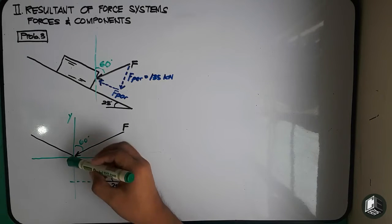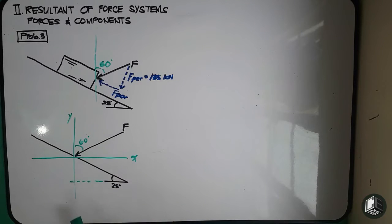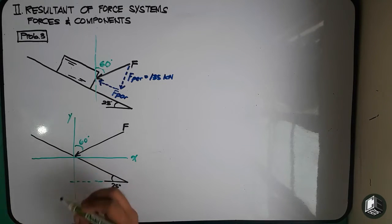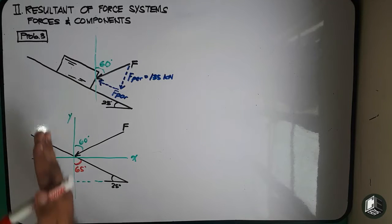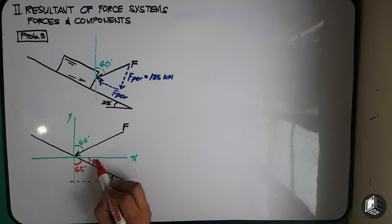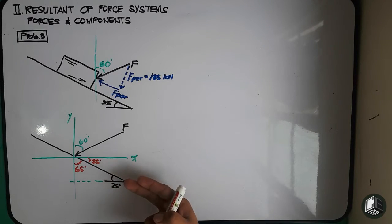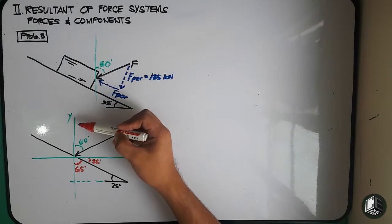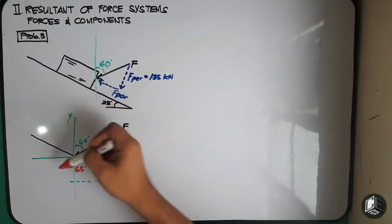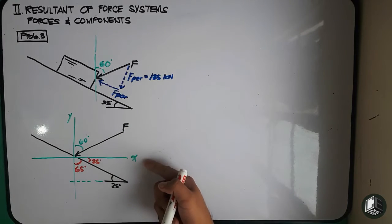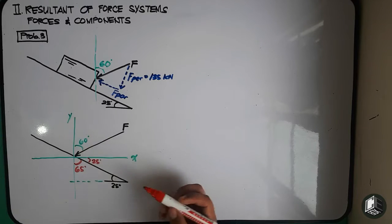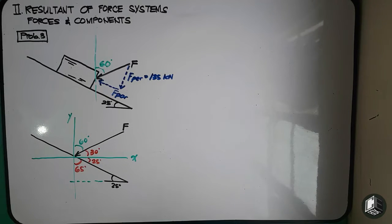If this is 25 degrees and we form a triangle here, therefore this angle is 90 degrees. To get this angle: 90 degrees minus 25 degrees equals 65 degrees. And since the y-axis and x-axis are perpendicular to each other, 90 degrees minus 65 degrees equals 25 degrees. So if this is 25 degrees, the angle of force F with respect to the x-axis is 90 degrees minus 60 degrees, which equals 30 degrees.